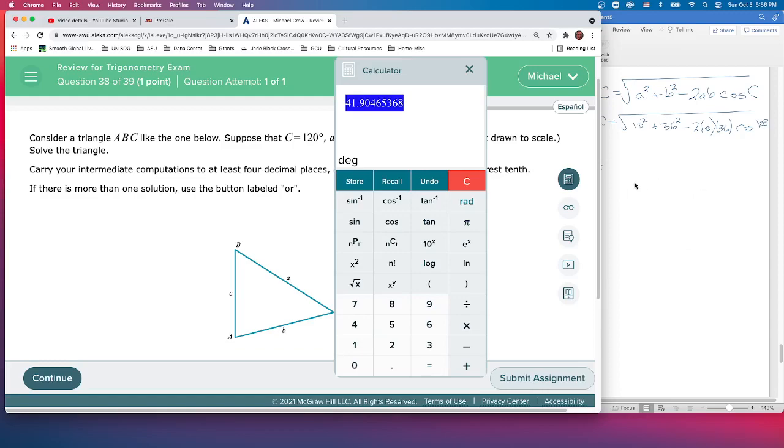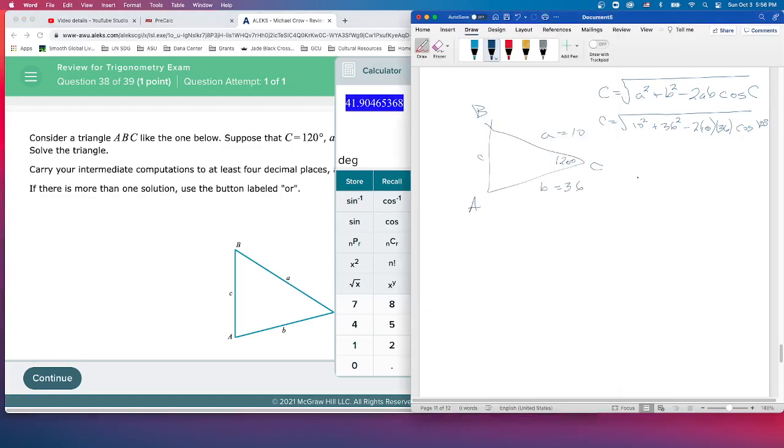So it tells us that c should be 41.9 to the nearest tenth.